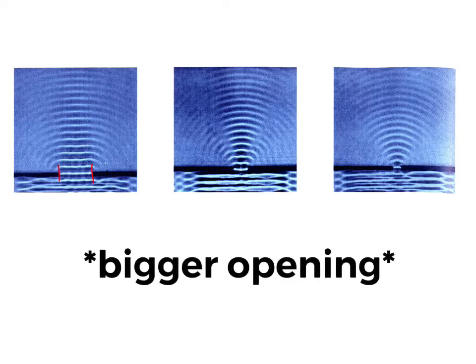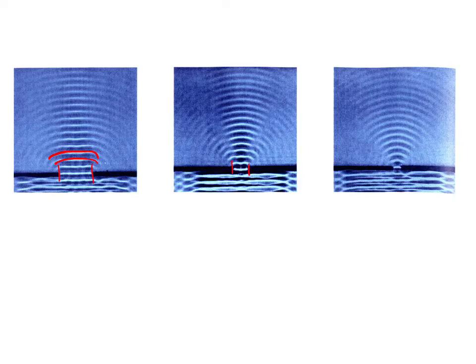So the smaller the opening is, the bigger the wave bends. So here we have a smaller opening. So our wave isn't bending as much. We make that a bit smaller, it starts bending a lot more. And then we make that really, really small and it's practically bending all the way around.